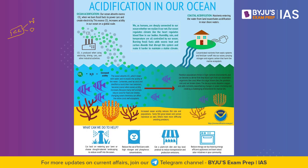Ocean acidification basically means our ocean absorbs excess CO2 when we burn fossil fuels to power cars and create electricity, and this CO2 increases acidity in our ocean on a global scale. We as humans are deeply connected to our ocean whether we realize it or not. Our ocean regulates climate like the heart regulates blood flow in our bodies. Humidity, rain, and temperatures are all controlled by the ocean. Burning of fossil fuels adds excess heat and carbon dioxide that disrupts this system, making it hard to maintain a stable climate.